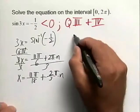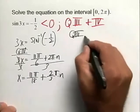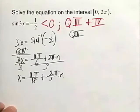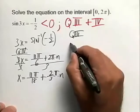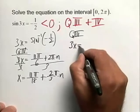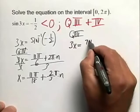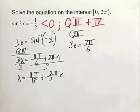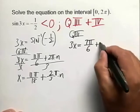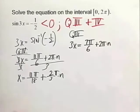Now let's think about quadrant 3. In quadrant 3, our reference angle is π/6. So we can also say that 3x is going to be equal to 7π/6 in quadrant 3. Again, addressing the periodicity, we're going to add 2πn to that value.